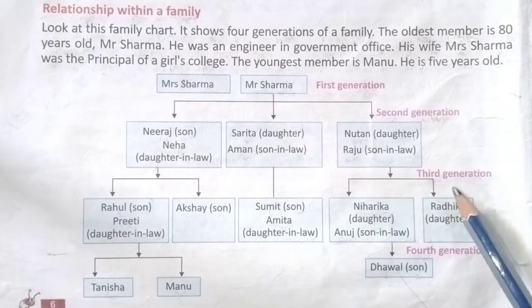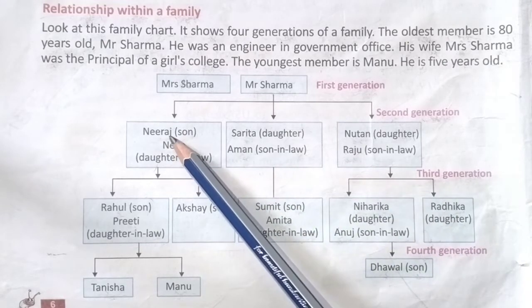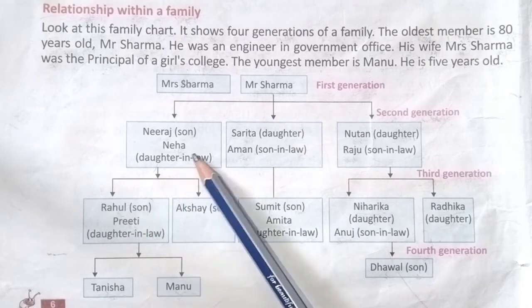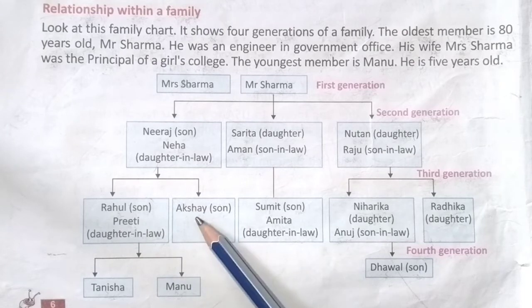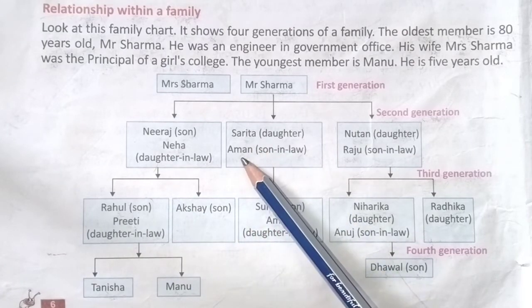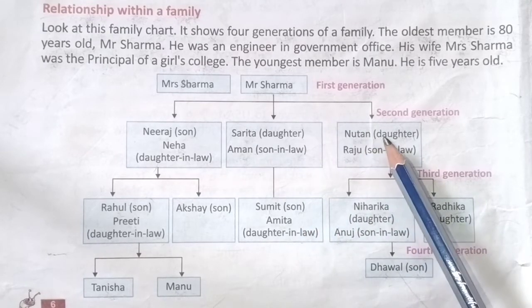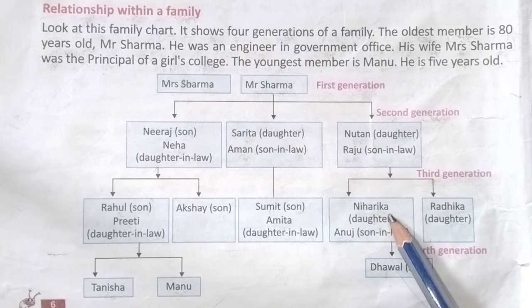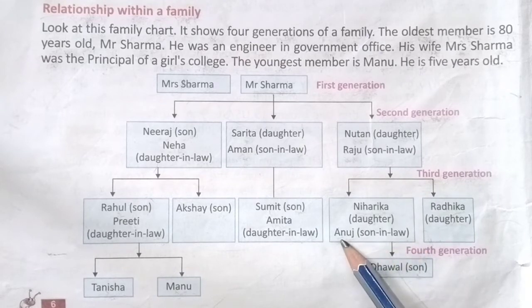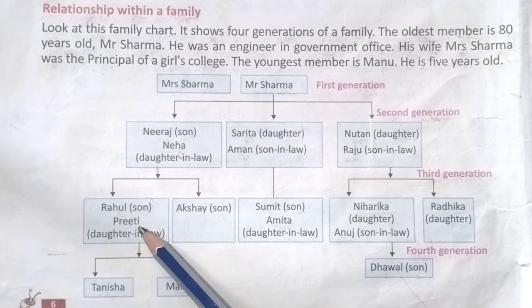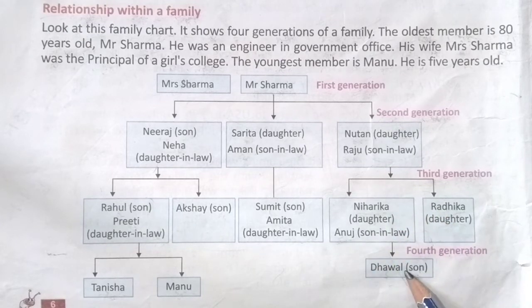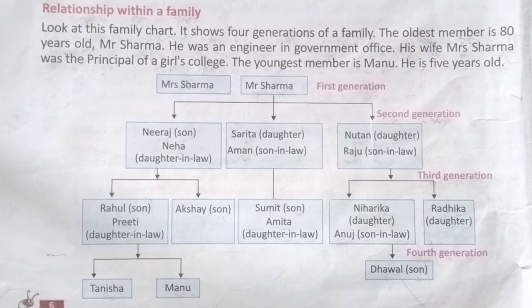In the third generation there are Neeraj and Neha's children: first, Rahul (son) and their daughter-in-law Priti; second, Akshay (son). Sarita and Aman's children are Sumit (son) and their daughter-in-law Amita. Nutan and Raju's children are first Niharika (daughter) and their son-in-law Anuj, and second Radhika (daughter). In the fourth generation there are Rahul and Priti's children: first Tanisha, second Manu. Niharika and Anuj's child is Dhaval (son).